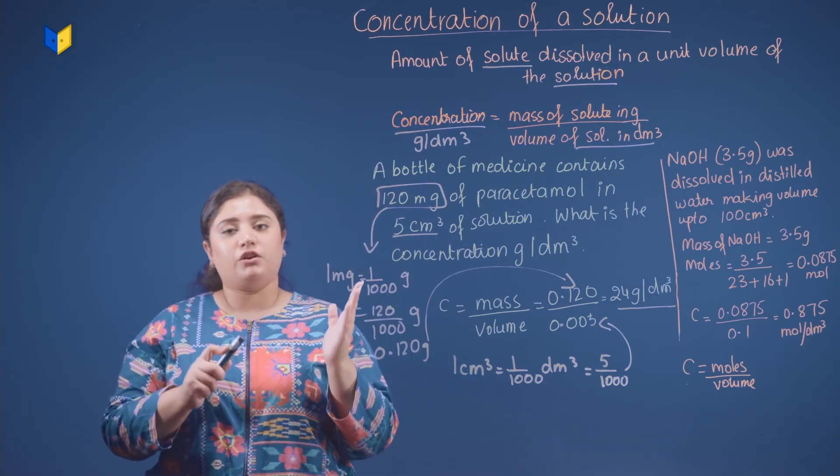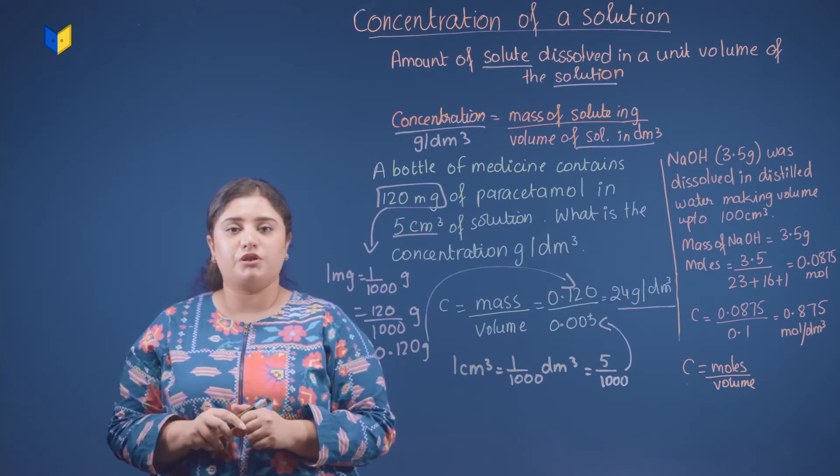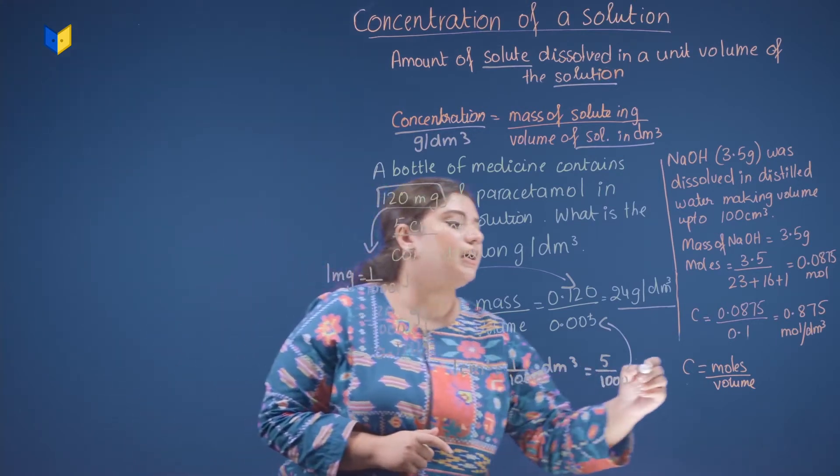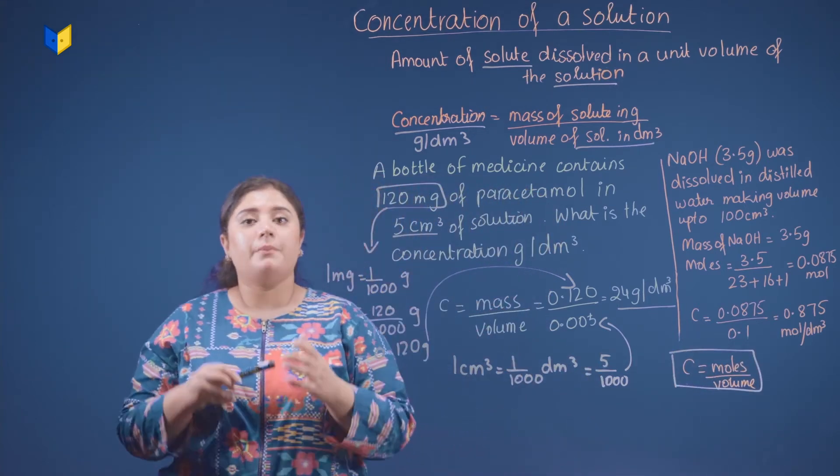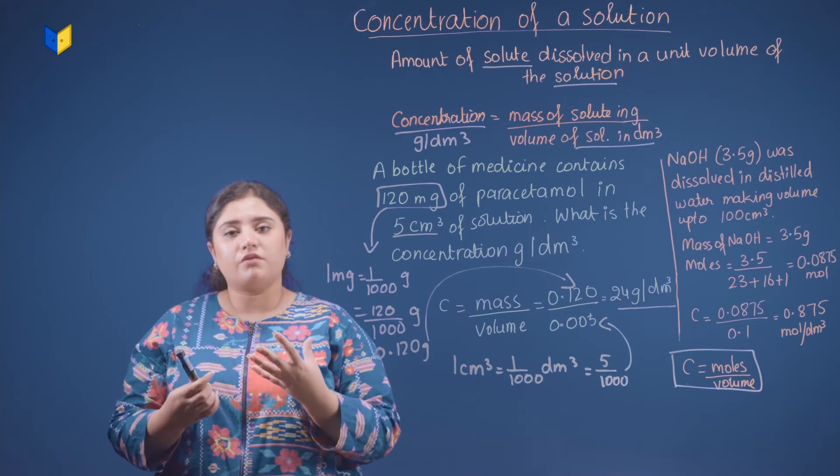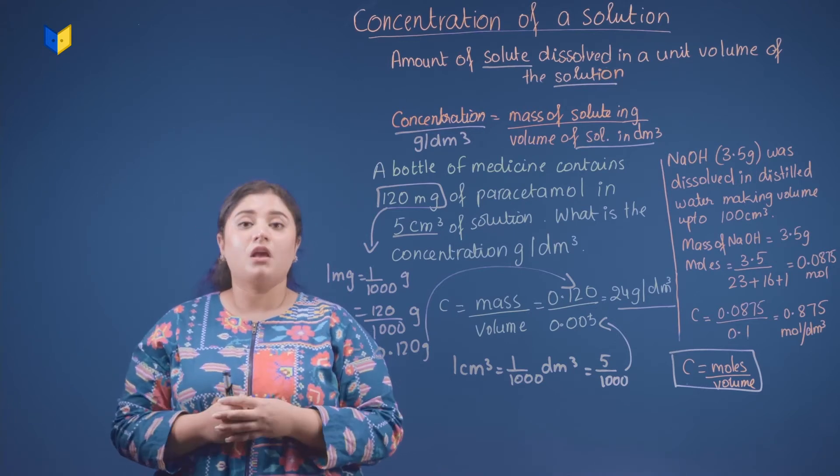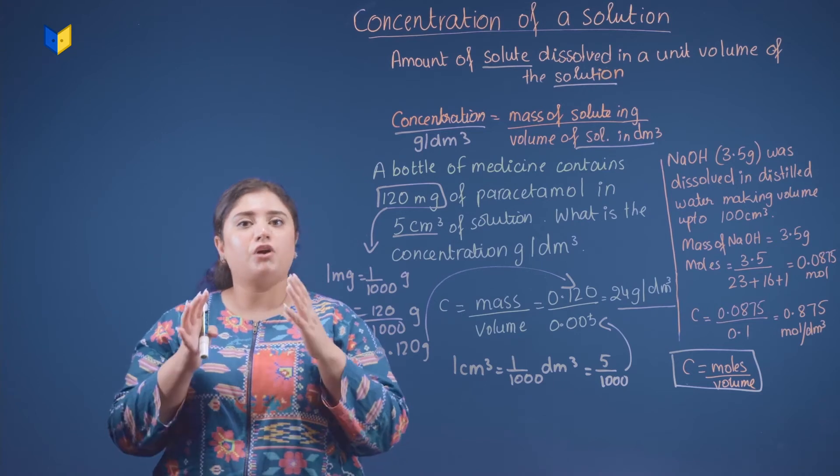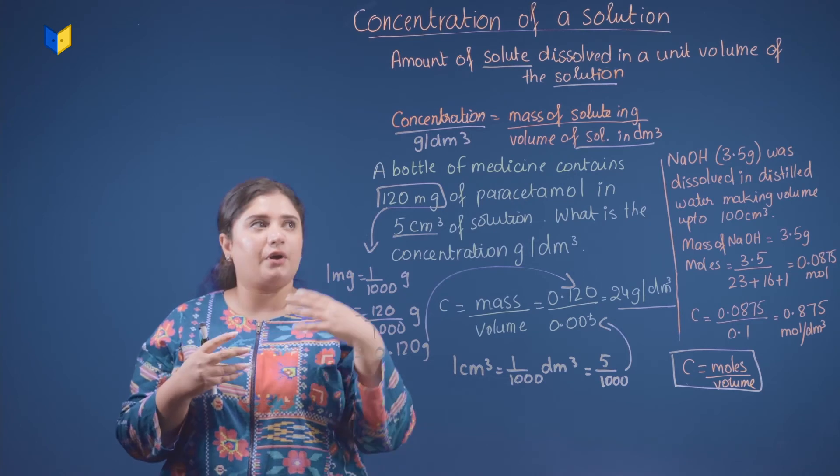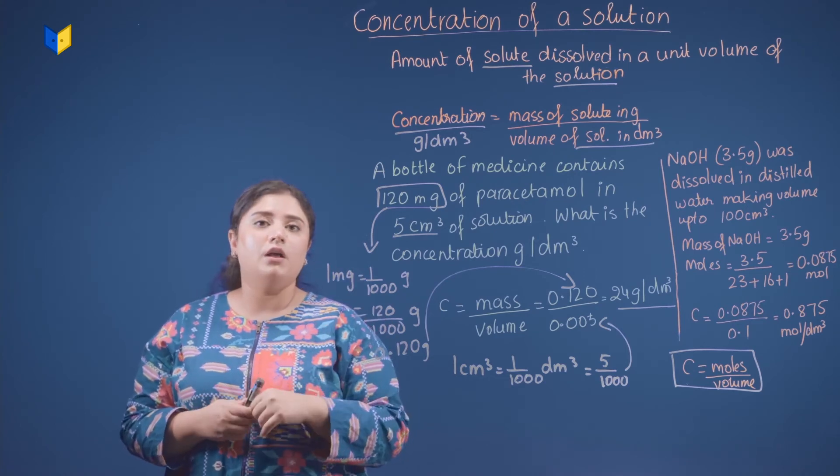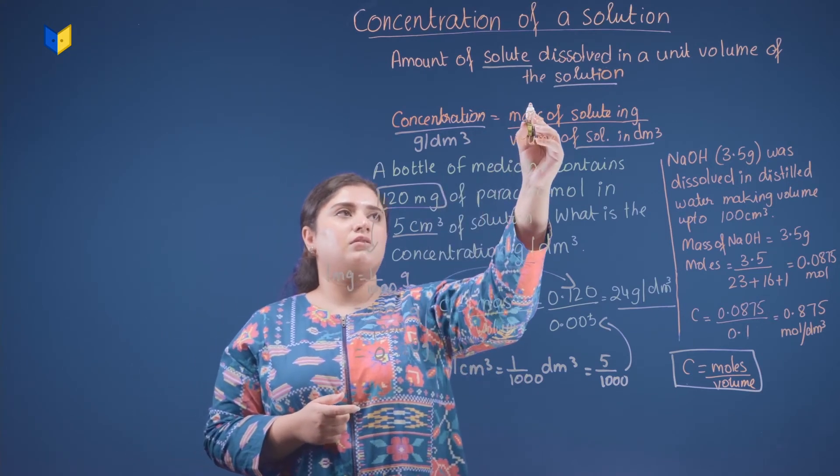This we have calculated using the first formula. Now there is another formula of concentration in which we use concentration equals moles over volume. In this, we will have moles given and volume given, and we can calculate the concentration. And remember one thing, it's not necessary that you can only calculate one thing. You can only calculate concentration, no. You can rearrange this formula. You can even find out the mass, you can even find out volume.